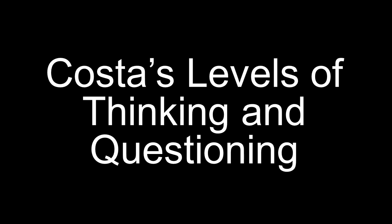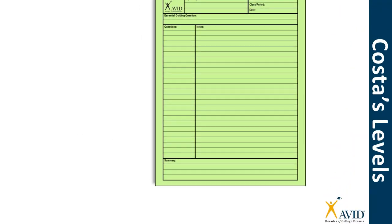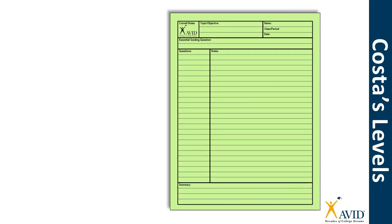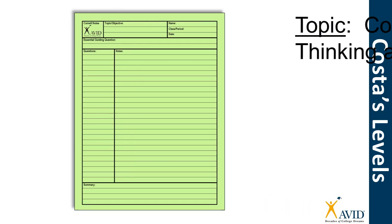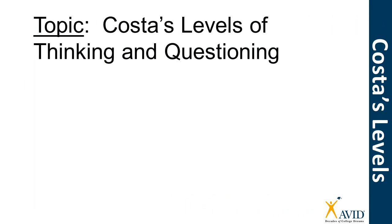So grab some Cornell notes and something to write with as we learn how to question our questions. The first thing you'll want to do is grab a set of Cornell notes. We'll be using green Cornell notes in class but you can use any color you like or have available. Make sure you head your paper in ink — name, class and period, and today's date. Then we get to the topic: Costa's Levels of Thinking and Questioning. Make sure you write that at the top.